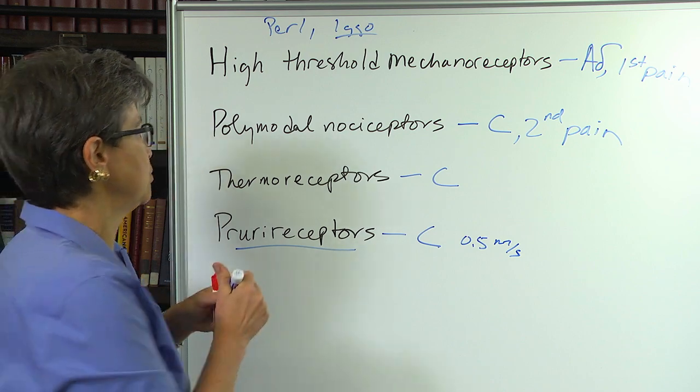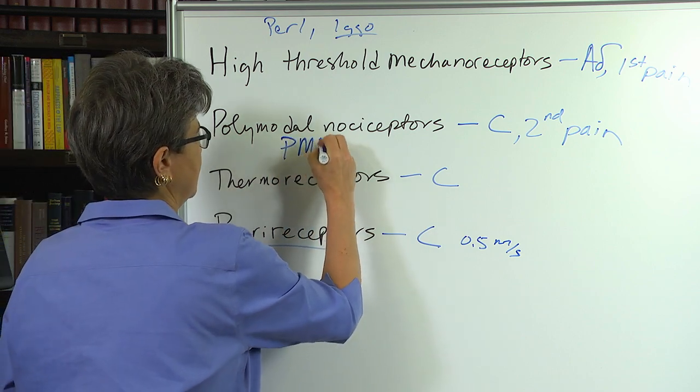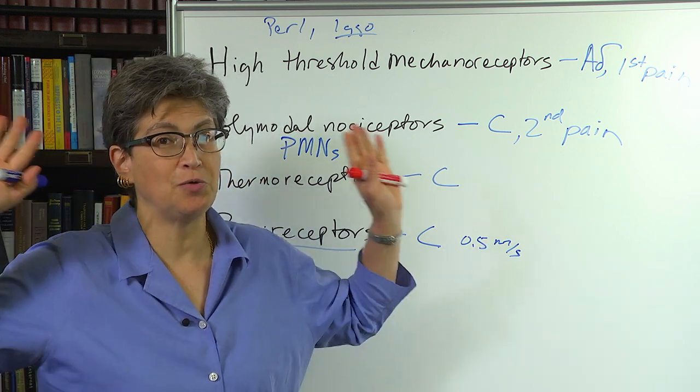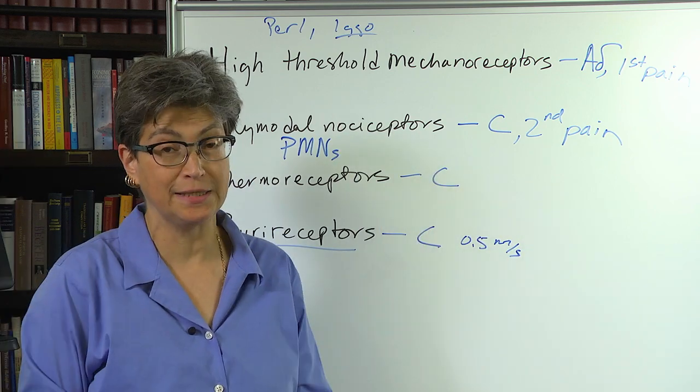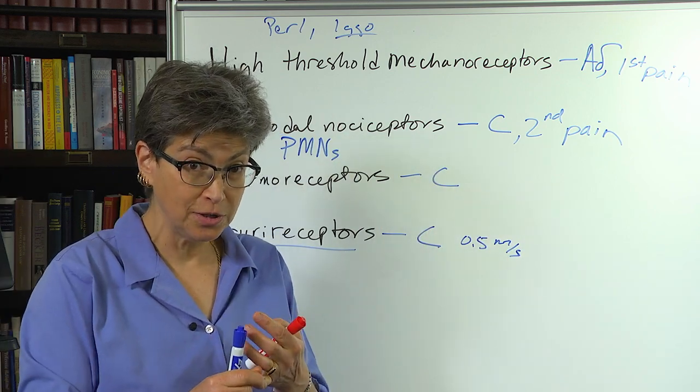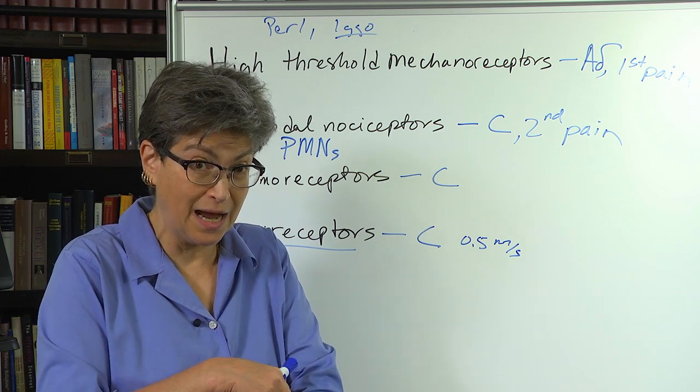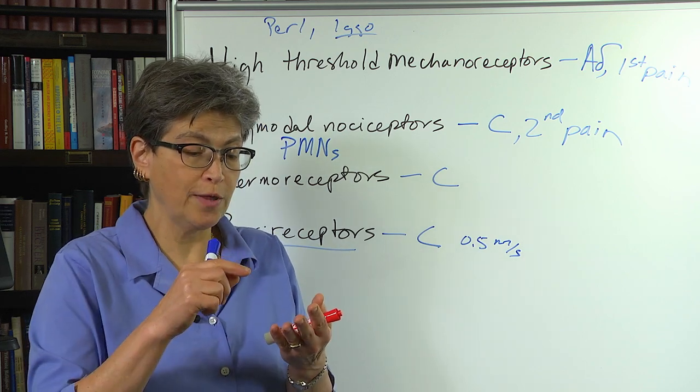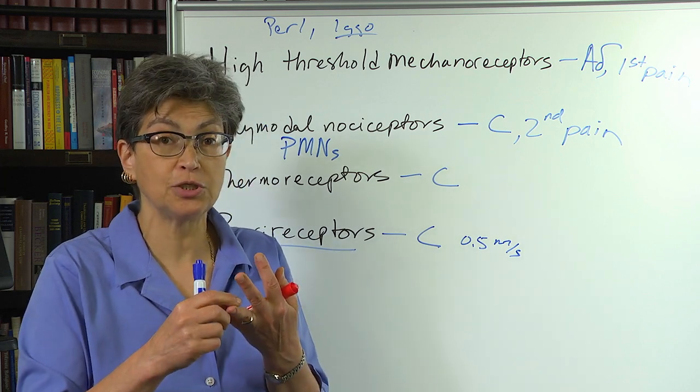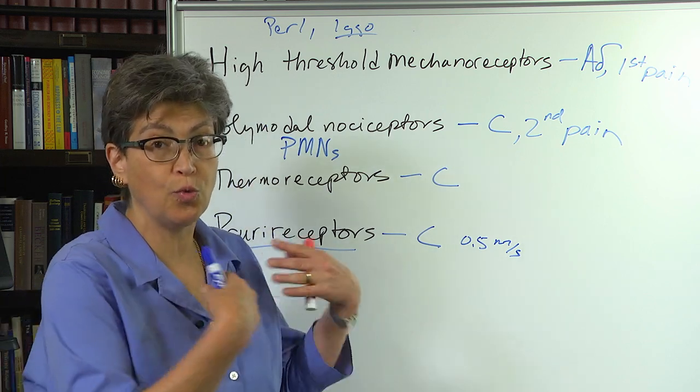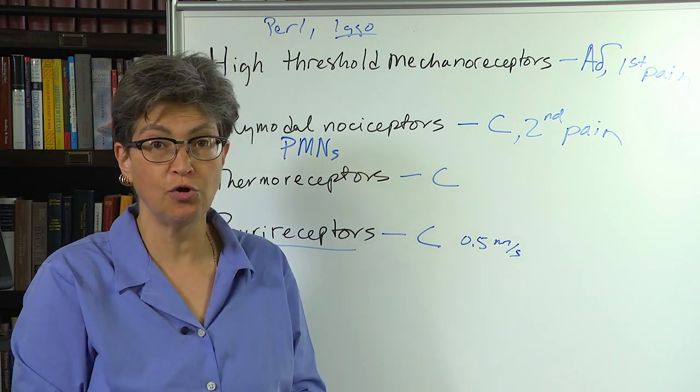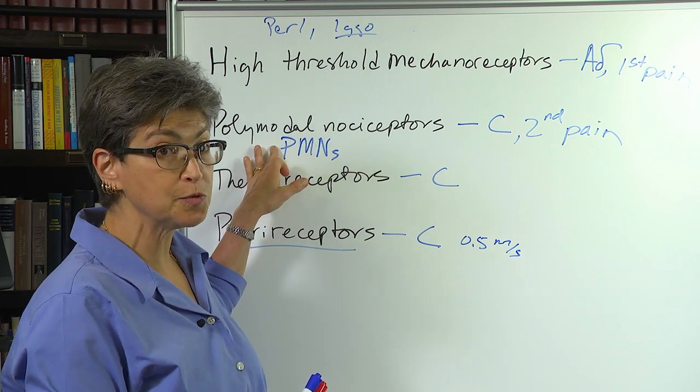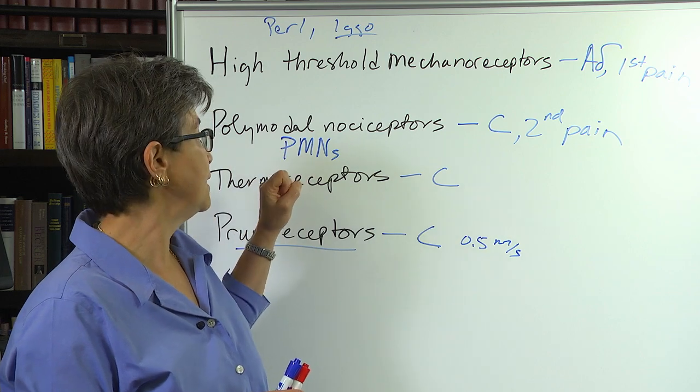Now, the polymodal nociceptors, which are abbreviated as PMNs, are jack-of-all-trades. They're just going to respond to any bad thing going on, no matter what it is, whether it's a noxious mechanical stimulus where there's been actual trauma, physical contact trauma, or whether it is a noxious temperature - way too cold or way too hot. If you touch the stove or you touch dry ice, this information is going to be transduced by the polymodal nociceptors.